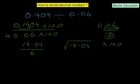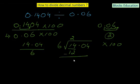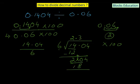We now divide 14.04 by 6. Taking the first two digits, 14 is greater than 6: 6 × 2 = 12, remainder 2. We bring down the dot and 0, giving 20. Since 2 is less than 6, we move the dot up to the quotient. Reading 20: 6 × 3 = 18, remainder 2. Bringing down 4 gives 24; 6 × 4 = 24, remainder 0. The answer is 2.34.